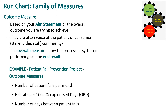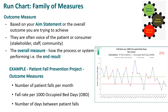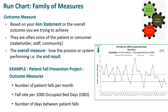An example here is about patient falls prevention. The outcome measures for this kind of project might be the number of patient falls per month, the fall rate per thousand occupied bed days, or the number of days between patient falls. And here's an example of a run chart looking at fall rate per thousand occupied bed days over time.